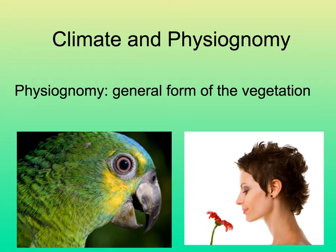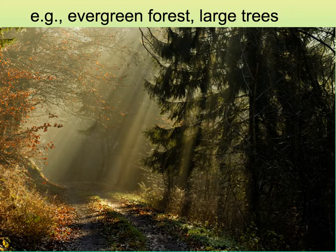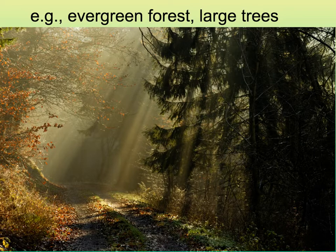It is the climate that determines the general form of the vegetation in any place on the earth. Sometimes the way things look is called their physiognomy. That term is used for what our faces look like, or the face of a parrot or another organism, but it's also the general appearance of the landscape or vegetation. For example, in the evergreen forest of the Pacific Northwest, there are many large trees through which the sun comes through in beautiful rays.